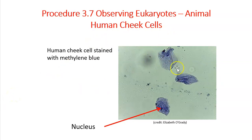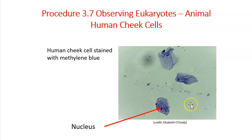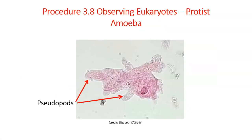When it comes to our cheek cells, make sure you're picking one out and drawing it nice and large, and that you're labeling any unique structures. In this case, the nucleus would be by far the most obvious organelle you're seeing in regards to that cell type.